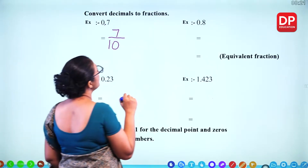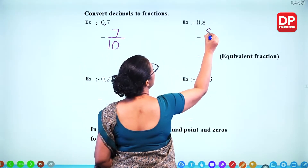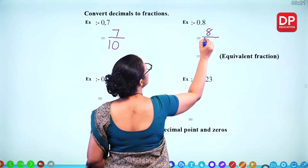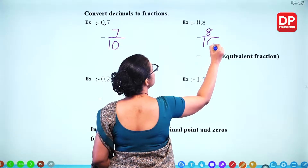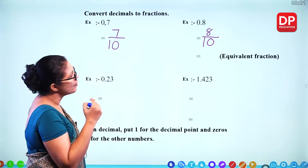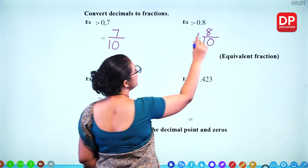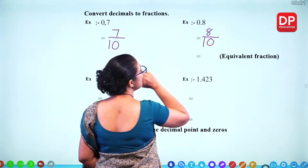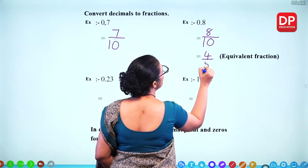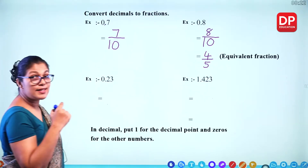For 0.8: put 8 in the numerator. For the denominator, put 1 for the decimal point and one 0 for 1 place, giving 8 over 10. You can simplify this fraction by dividing both numerator and denominator by 2, giving 4 over 5 — that is an equivalent fraction in simplest form.